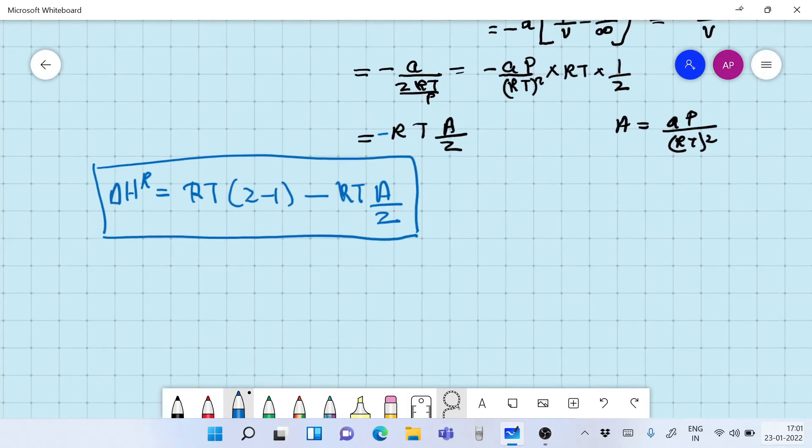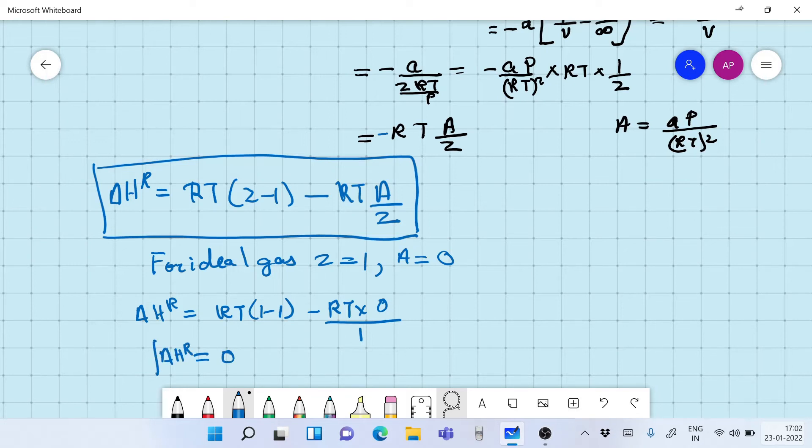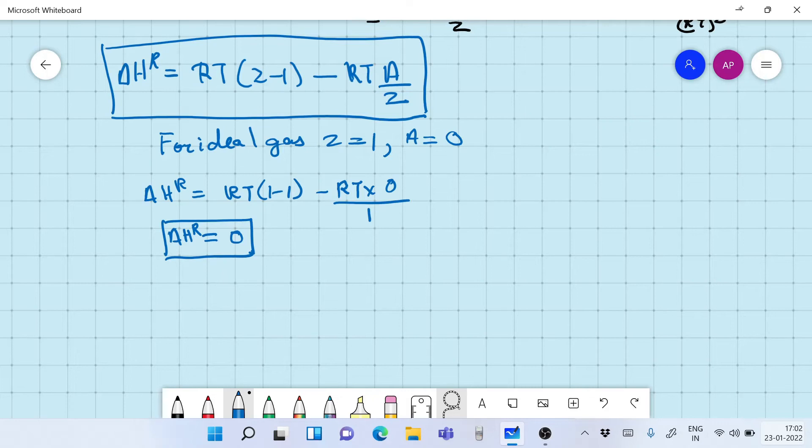Now let's check this. So for ideal gas, Z is equal to 1 and A is equal to 0. Therefore, we get ΔH^R for an ideal gas as RT times 1 minus 1 minus RT into 0 over 1, which is nothing but all this is equal to 0. And for an ideal gas, we get the expression that ΔH^R is 0, which is a fact. That is the residual enthalpy for an ideal gas is always 0.